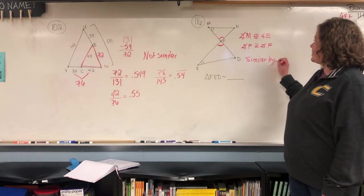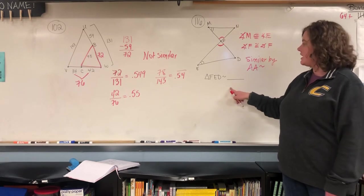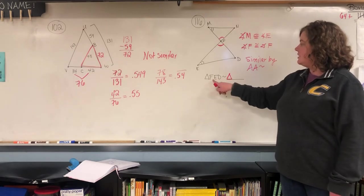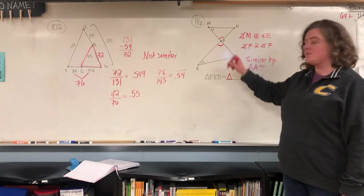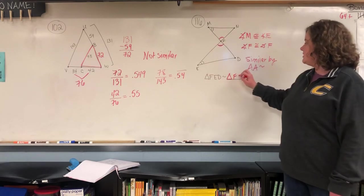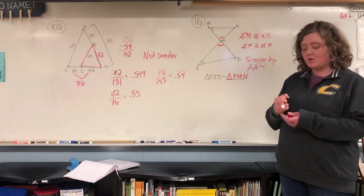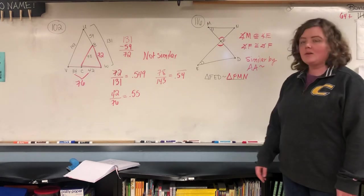Similar by angle-angle-similar, and then they want you to do the similarity statement. So you're going to draw a little triangle. F goes with F in both triangles. E matches up with M. So then D has to go with N. So remember, order matters. You've got to match up the letters. They go together.